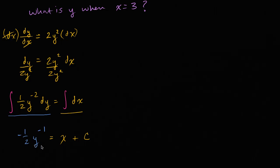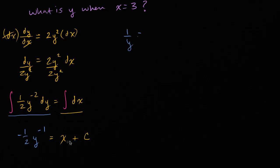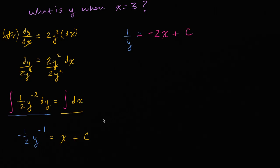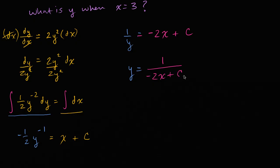If I want, I can solve for y. If I multiply both sides by negative two, the left-hand side becomes y to the negative one, or one over y, equal to negative two times x plus some arbitrary constant — it's still just an arbitrary constant. Then if we take the reciprocal of both sides, we get y is equal to one over negative two x plus c.